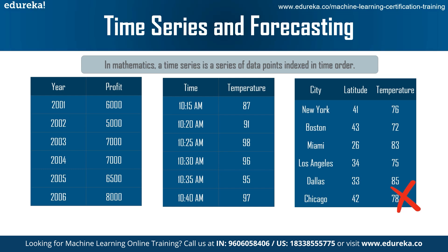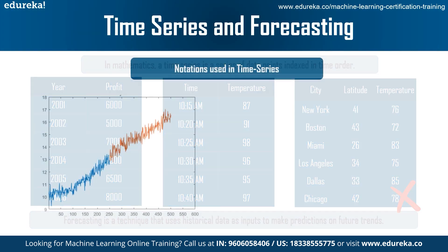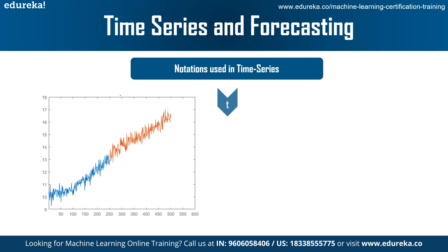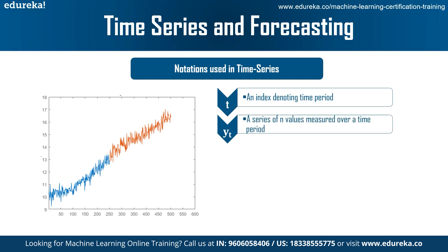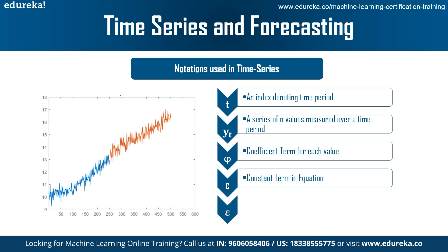Using suitable time series, forecasts can be made. Forecasting is a technique that uses historical data as inputs to make informed estimates predictive in determining the direction of future trends. There are various notations used in time series data: T denotes the time period index; Yt is the series of n values corresponding to each time index T; phi denotes the coefficient for each value of Yt; C is a constant term denoting the bias of the model; and eta denotes the forecast error — the actual value Yt minus the forecasted value Ft.